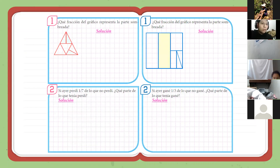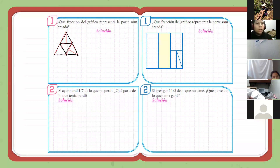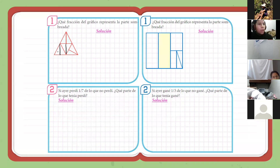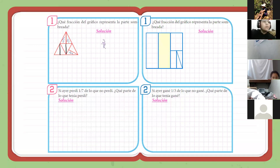Primero que podemos dar cuenta acá es que se tratan de cuatro triángulos iguales. Los voy a sombrear de negro: uno, dos, tres y cuatro. Esos cuatro triángulos son iguales. Sin embargo, hay una línea que está dividiendo a cada uno. Vamos a trazar esa línea para tener partes iguales. ¿Cuántas partes tenemos en total? Ocho triángulos pequeños. Tenemos partes pintadas: una, dos y tres. Entonces, sería tres de ocho.